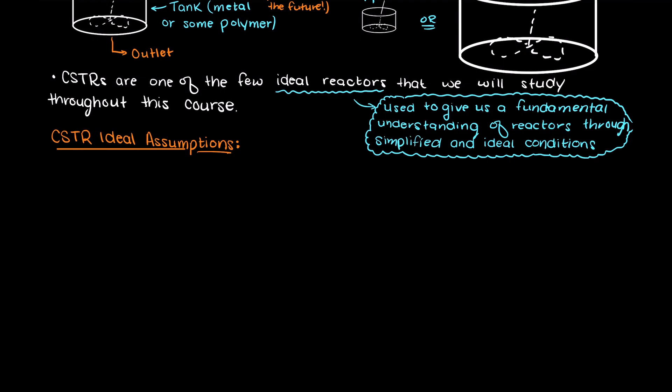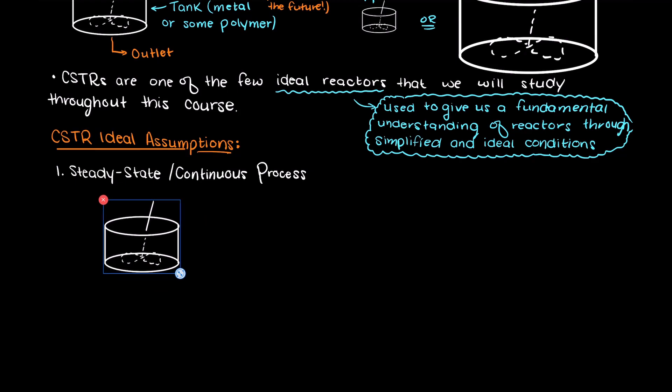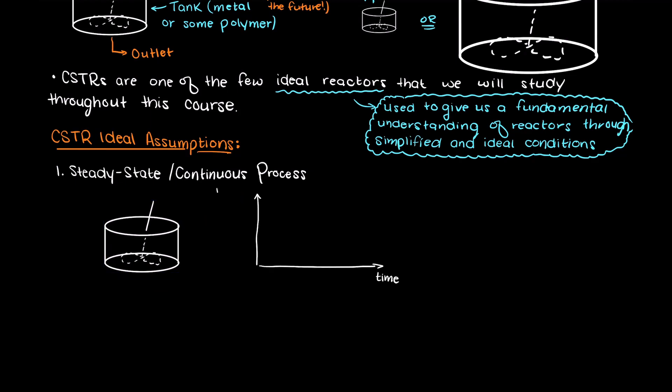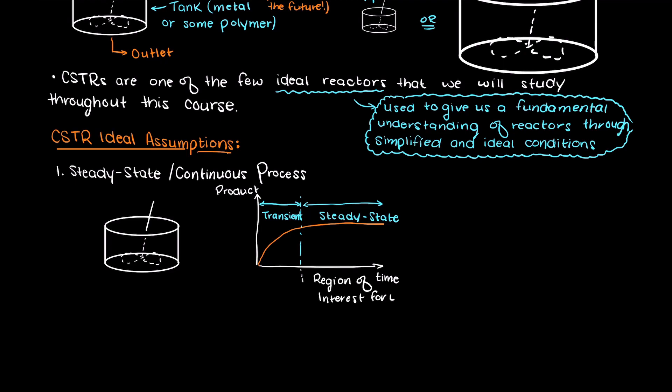Firstly, we have nothing changing in time since we are at steady state. Now, realistically, when we begin our reactor there will be a period where we are not at steady state — this is known as the transient portion or the transient region. You can imagine this through the changing concentration of a reaction product. However, when we are analyzing CSTRs we are more often than not just interested in the region that is not changing in time.